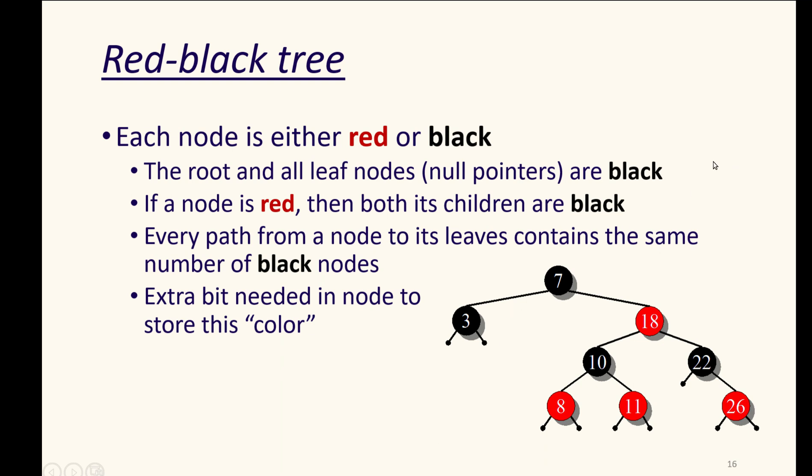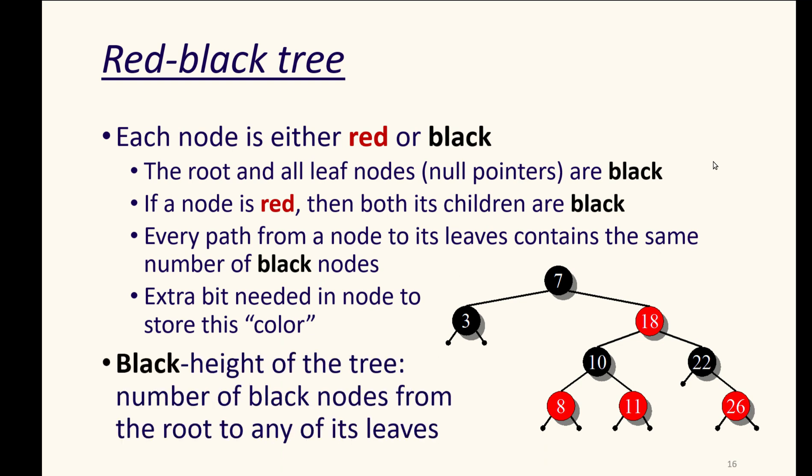Those won't have the indicator. We will notice they're null, and we'll treat them as black nodes. This gives us a measurement of the black height of the tree, meaning the number of black nodes from the root to any of its leaves.